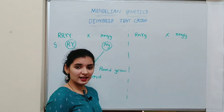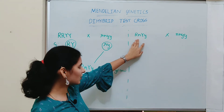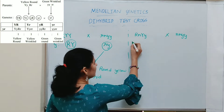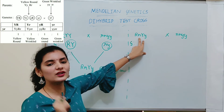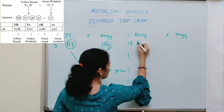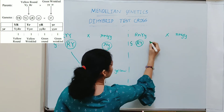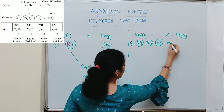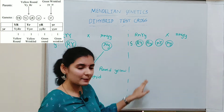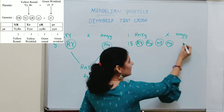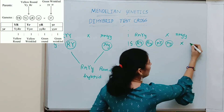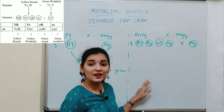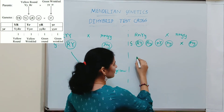The second possibility is crossing the F1 plant which is heterozygous — genotype RrYy — with the double recessive parent. The heterozygous parent can produce four types of gametes: RY, Ry, rY, and ry. The double recessive plant produces only one type of gamete: ry. All gametes from the double recessive parent will have the factor ry.